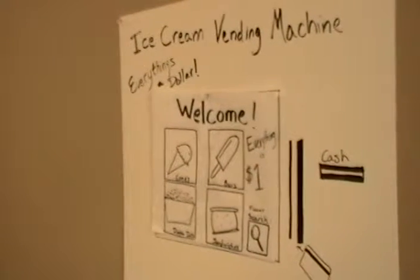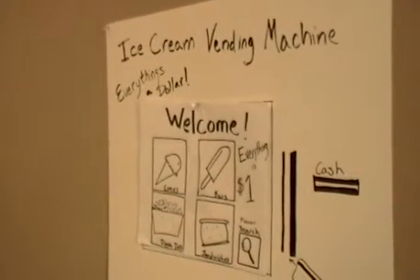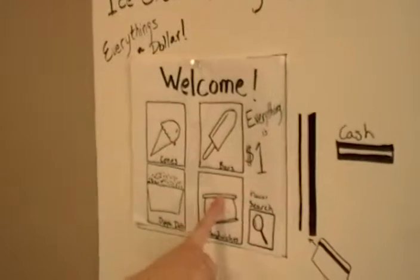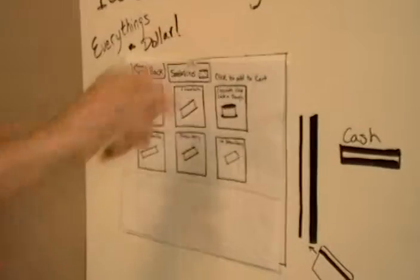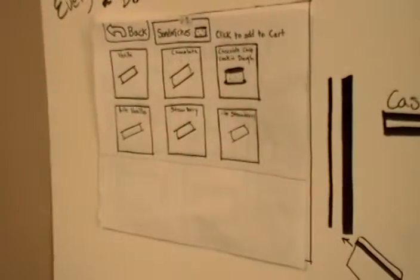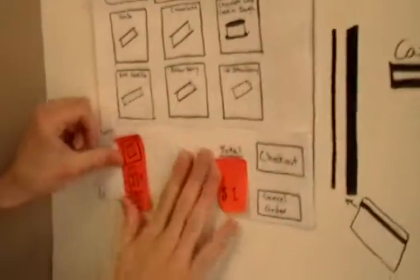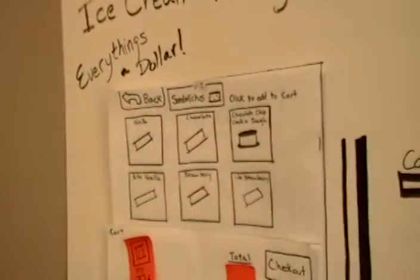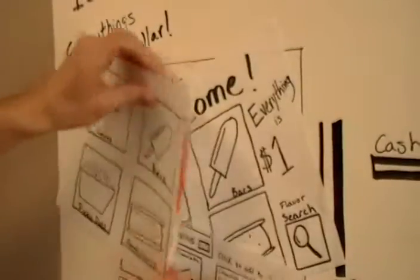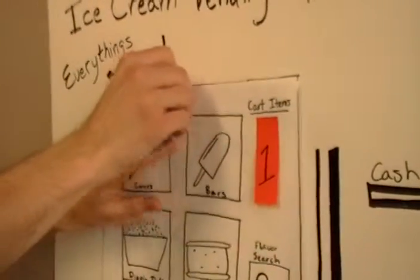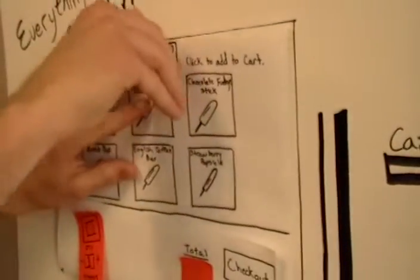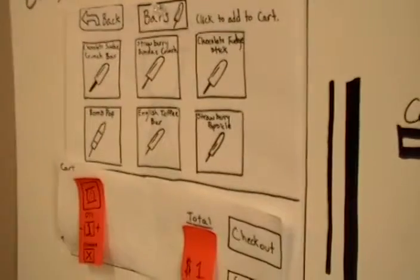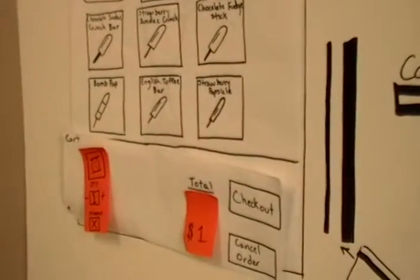Purchase three items of your choice. You must use the flavor search for one item. And then go to checkout and pay with a card. I'll have a strawberry ice cream sandwich. I'll have an English toffee bar.